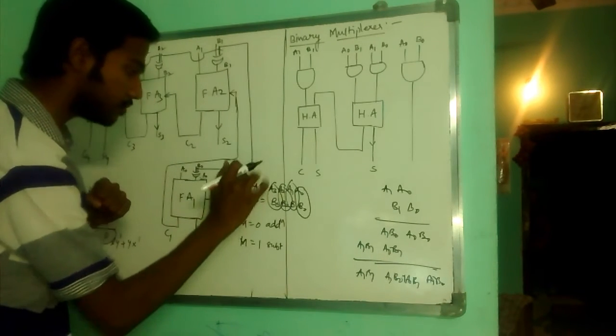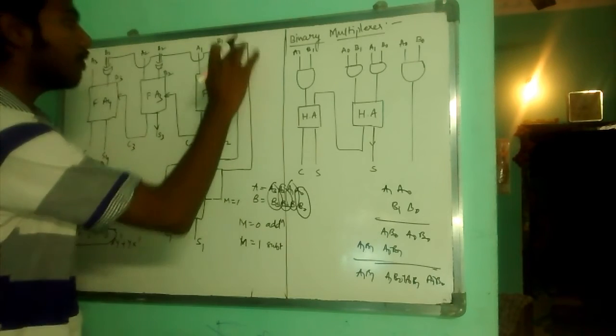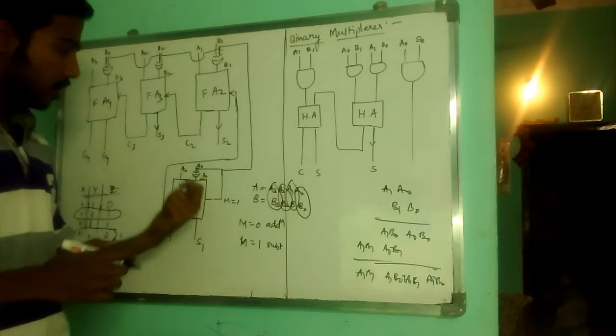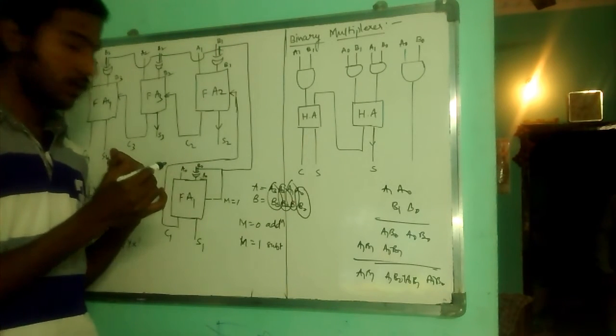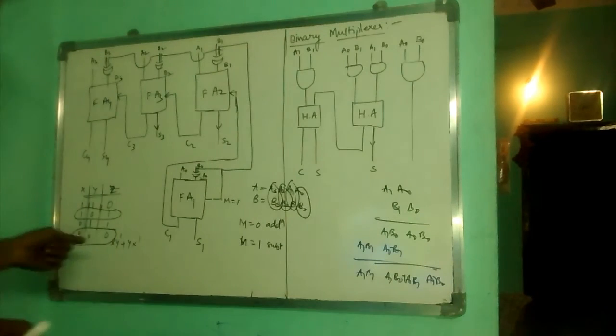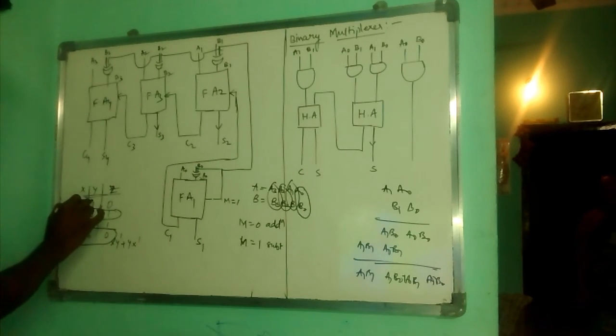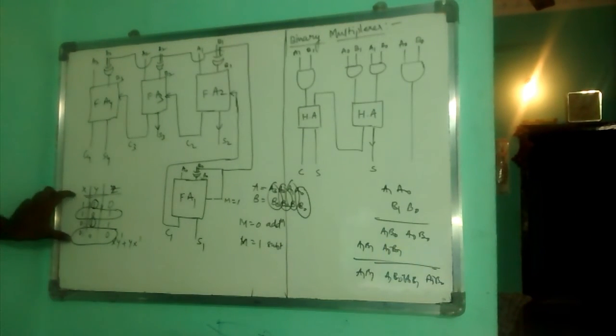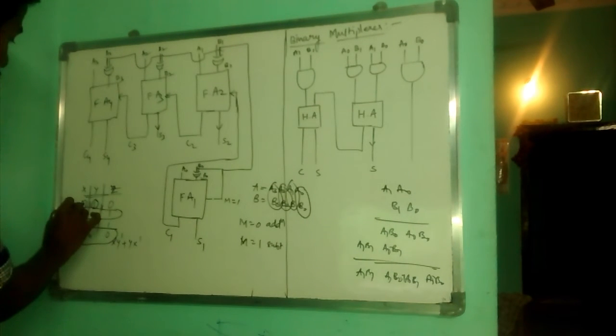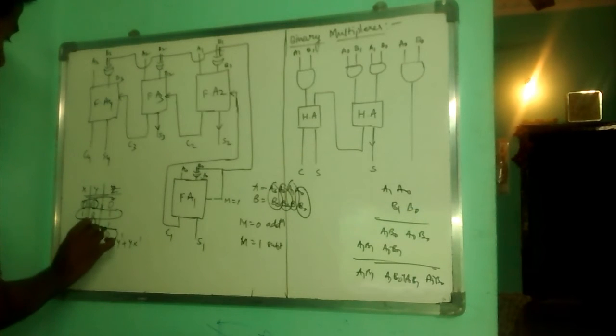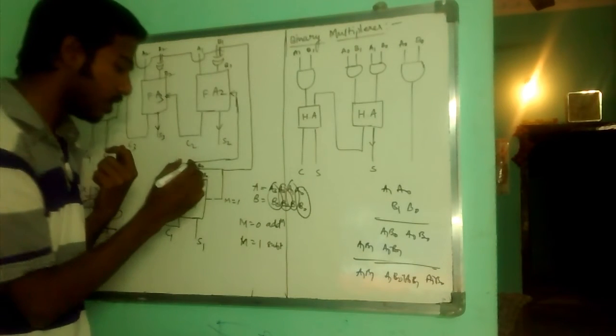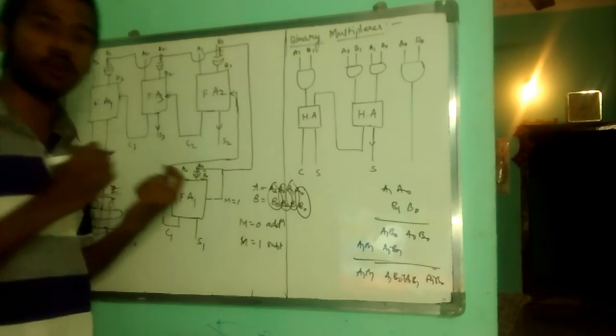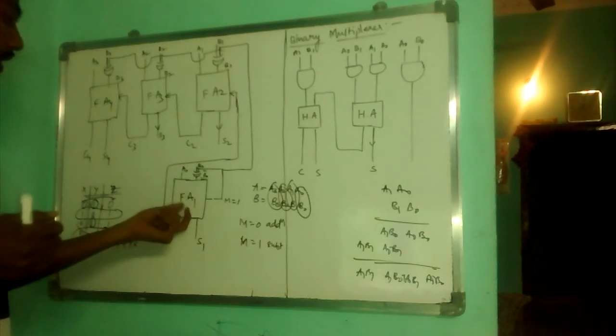Now, whenever M equals 1, M equals 1 is sent into XOR, along with B1. Whenever you can see, one of the input is 1, then XOR reflects the complement of the input. 1, we get output as 0, 0, we got output as 1. So, whenever B0 and M equals 1 are given to XOR gate, we get output as B0 complement.